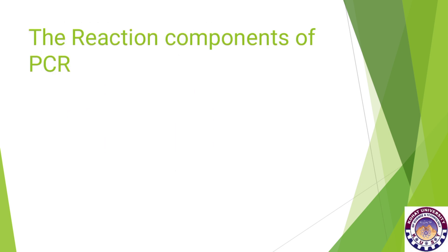The reaction components of PCR. First is the target DNA. Obviously, if you have no target DNA, you cannot do a PCR reaction. If you have a DNA sequence or a gene that you want to copy, you need a target DNA. You cannot amplify the entire DNA — you amplify within a gene or a few genes.